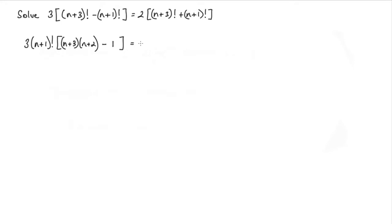On the right hand side, do a similar thing. I've got n+1 factorial, and I'll need to multiply that by n+3 and n+2. That will give me this n+3 factorial term. And then I need to add on just a 1 here, this n+1 factorial.